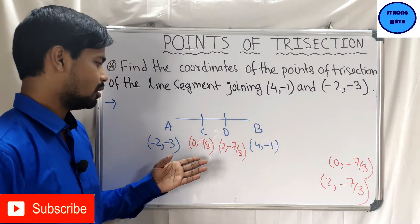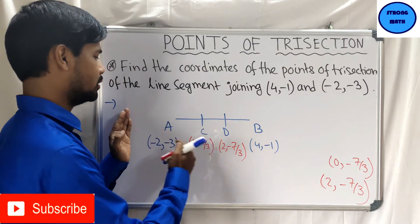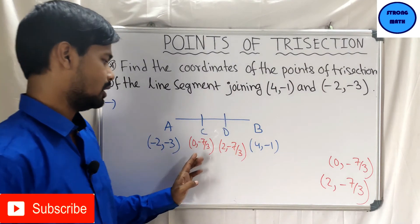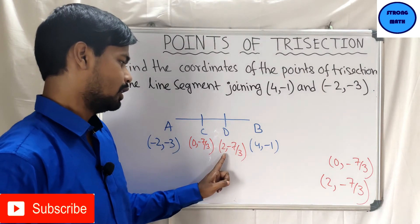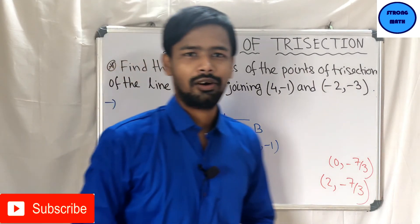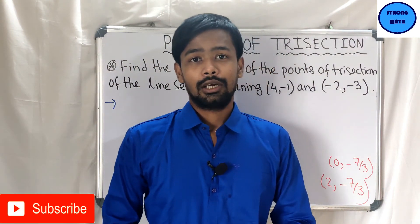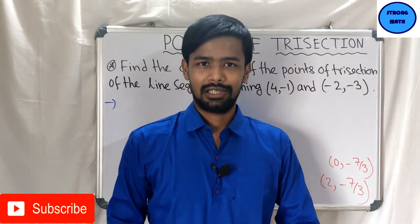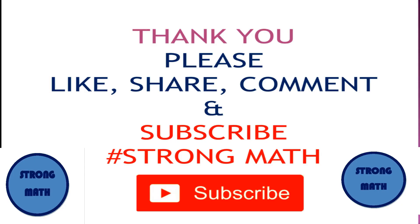The points of trisection are C and D of the line segment joining the given two points A and B. Coordinates of C are (0, −7/3) and coordinates of D are (2, −7/3). That's it for today's lecture. Please comment below if you have any doubts. Keep watching, thank you.